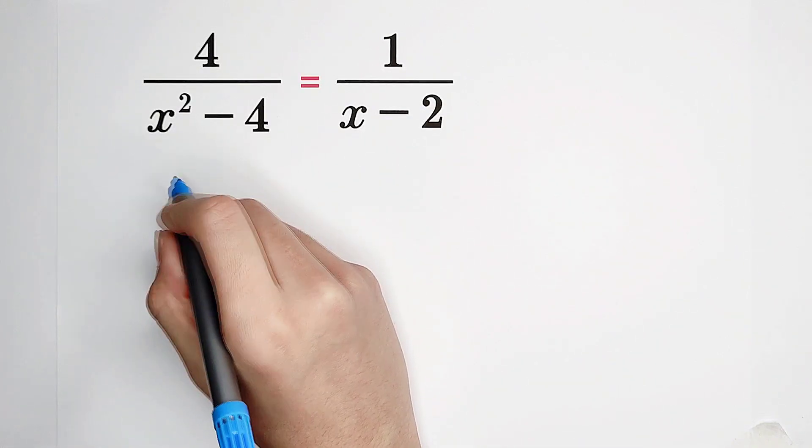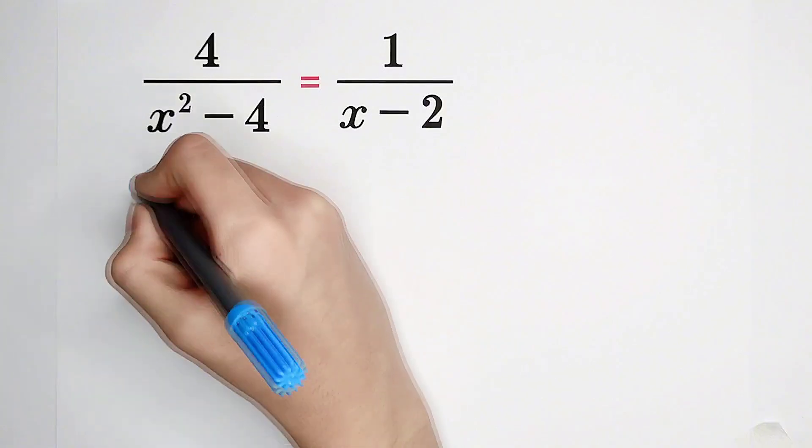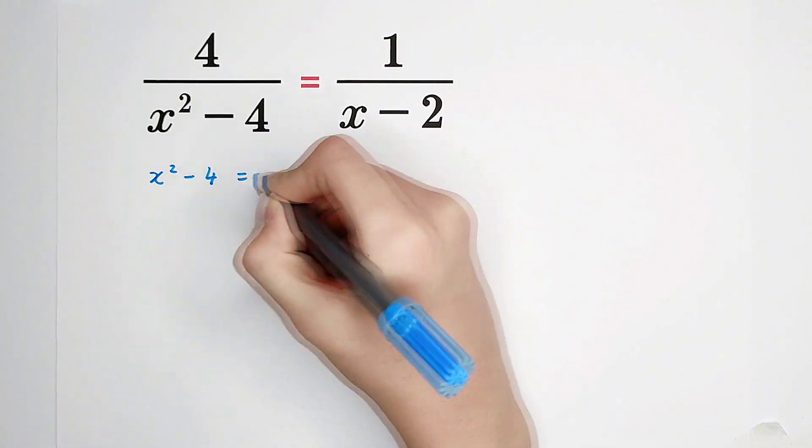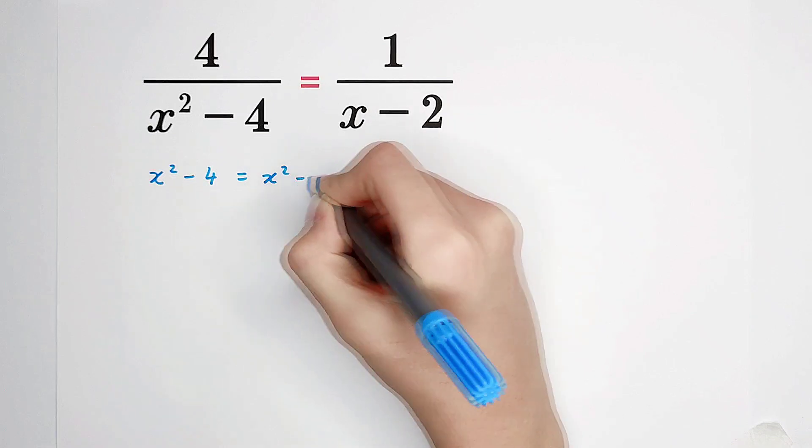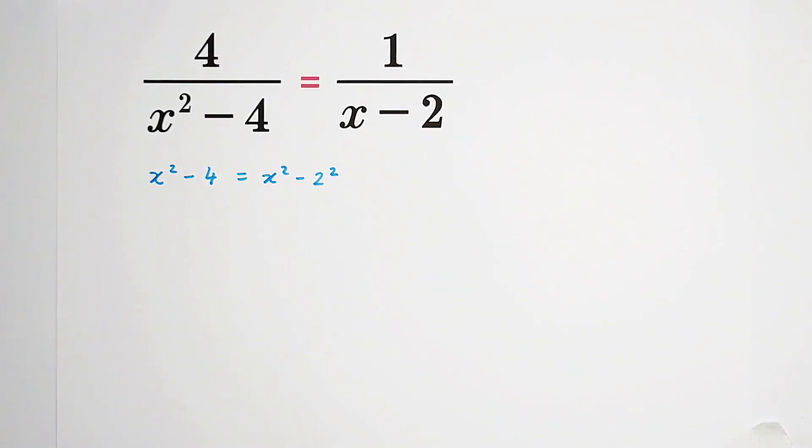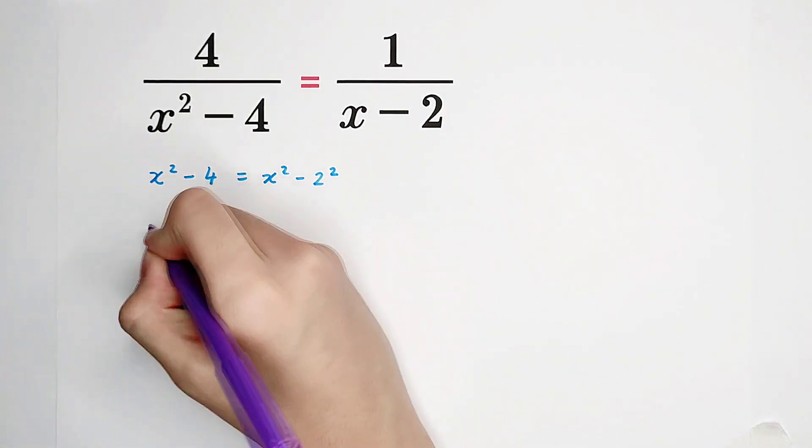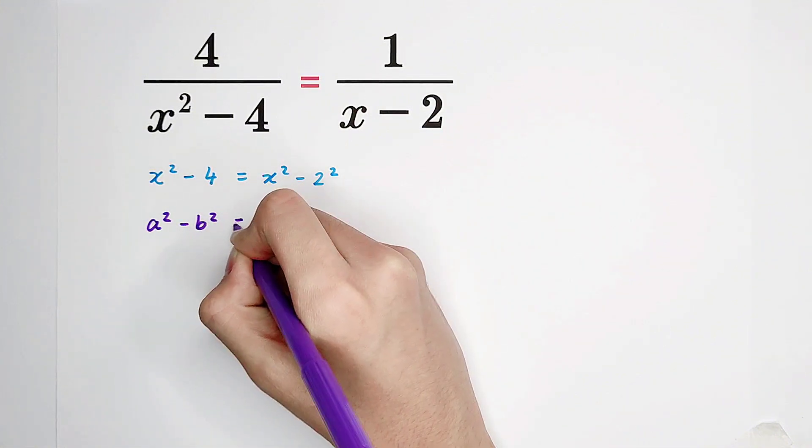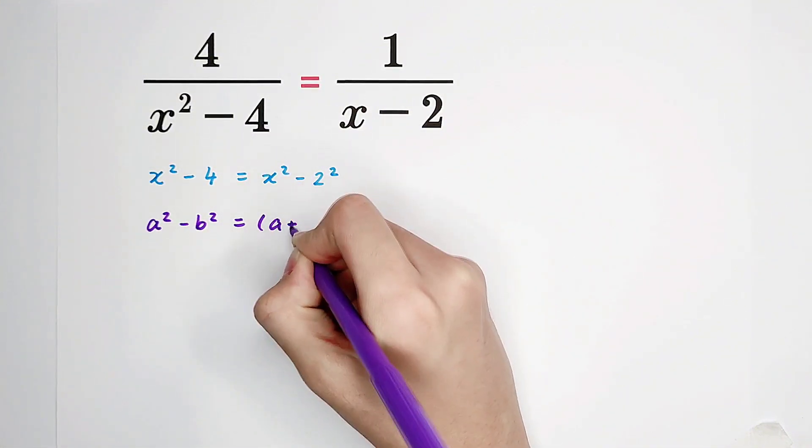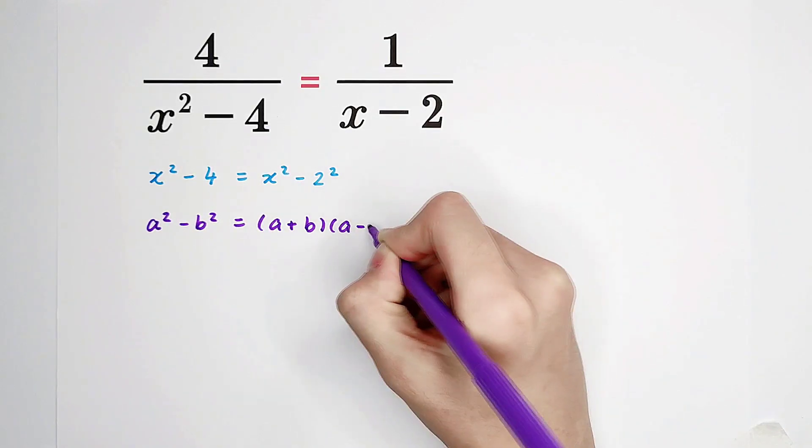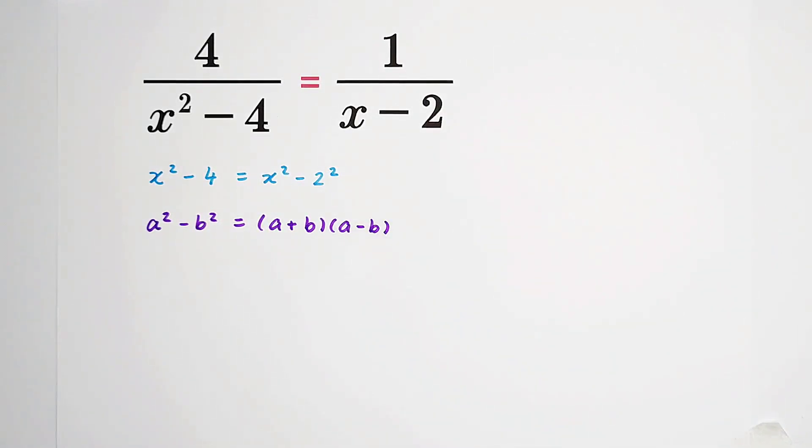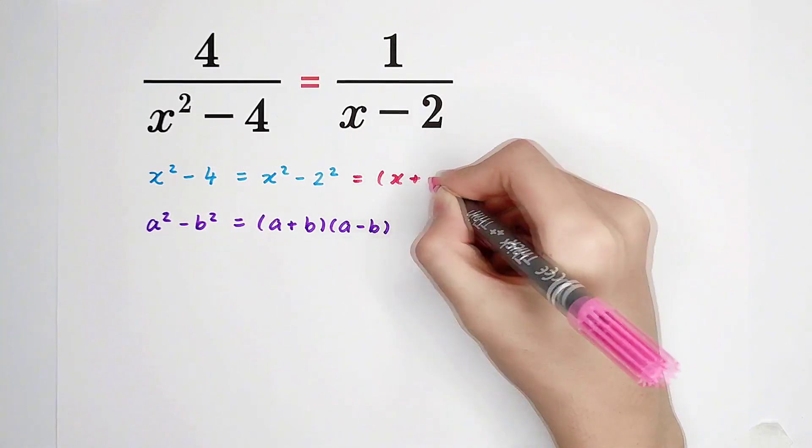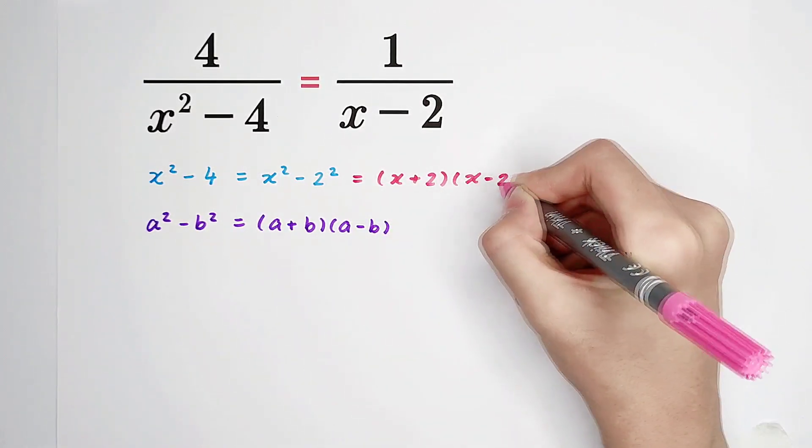You can find out this denominator can be factorized. x squared minus 4 is x squared minus 2 squared. And by using the formula, a squared minus b squared equals a plus b times a minus b, this is x plus 2 times x minus 2.